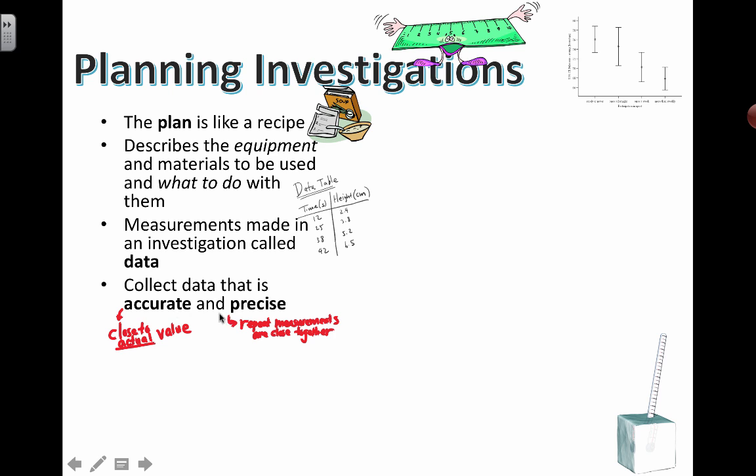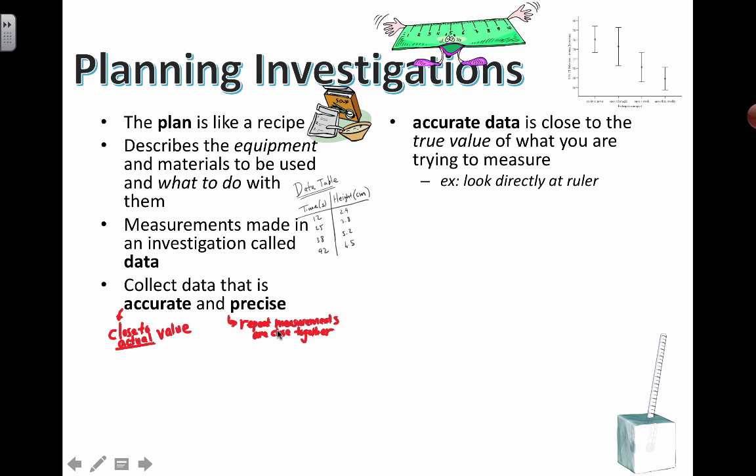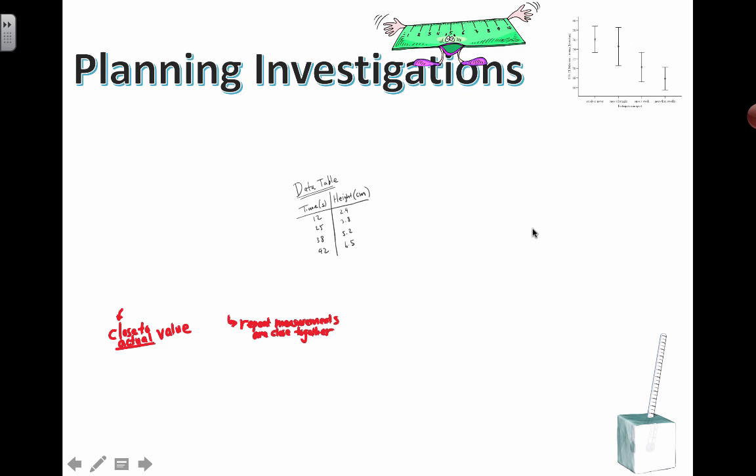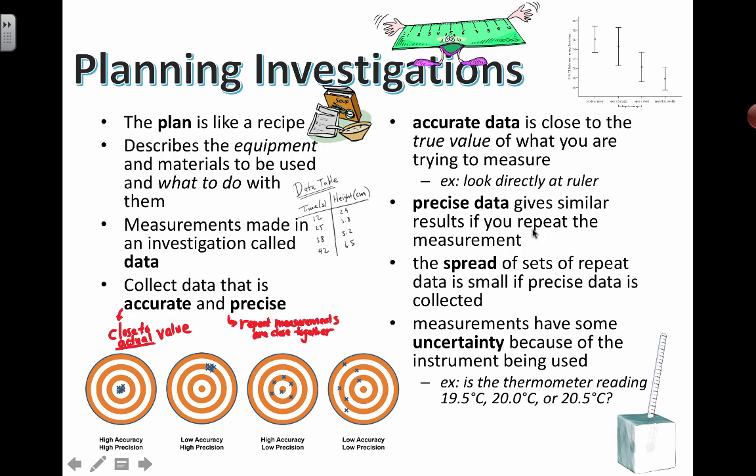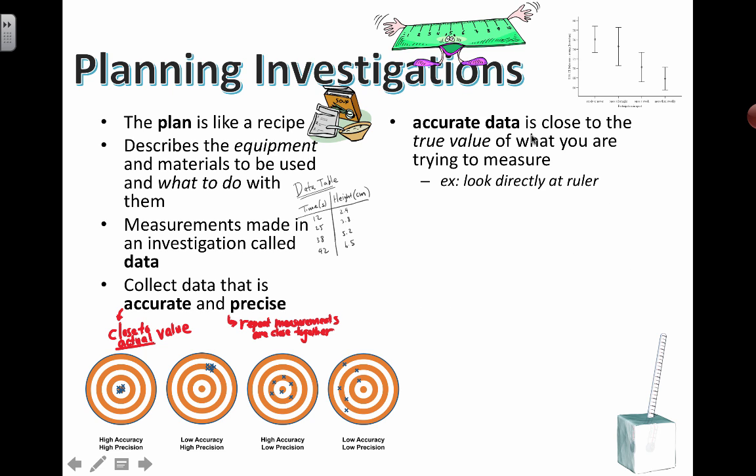This is important. The words accuracy and precision, to be accurate and precise. Accurate says close to the actual value. Precise means repeat measurements are close together. So we're going to see that in more detail over here. And there's a little diagram that I'll show in a second. You can take a look at this diagram here with the rest of this information as well. Accurate data is data that you collect that is close to the true value of what you're trying to measure.